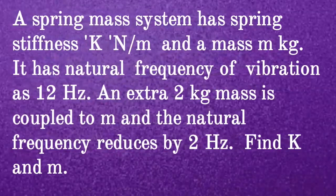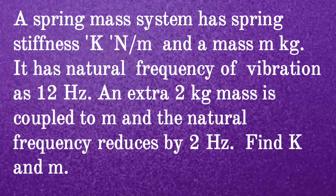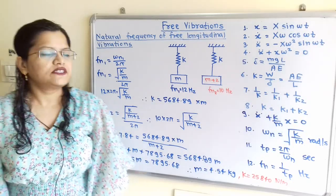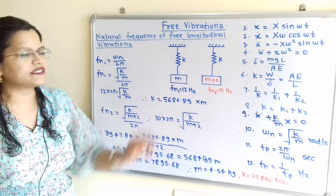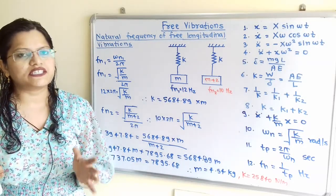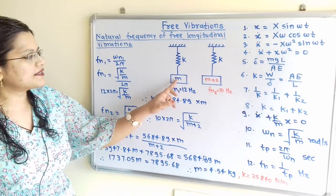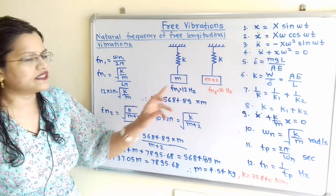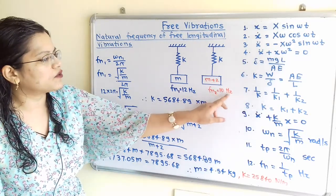Second given question: a spring-mass system has a spring stiffness k Newton per meter and a mass of m kilogram, with a natural frequency of 12 Hz. An extra 2 kilogram mass is coupled to m and the natural frequency reduces by 2 Hz, giving fn2 equal to 10 Hz. Find k and m.